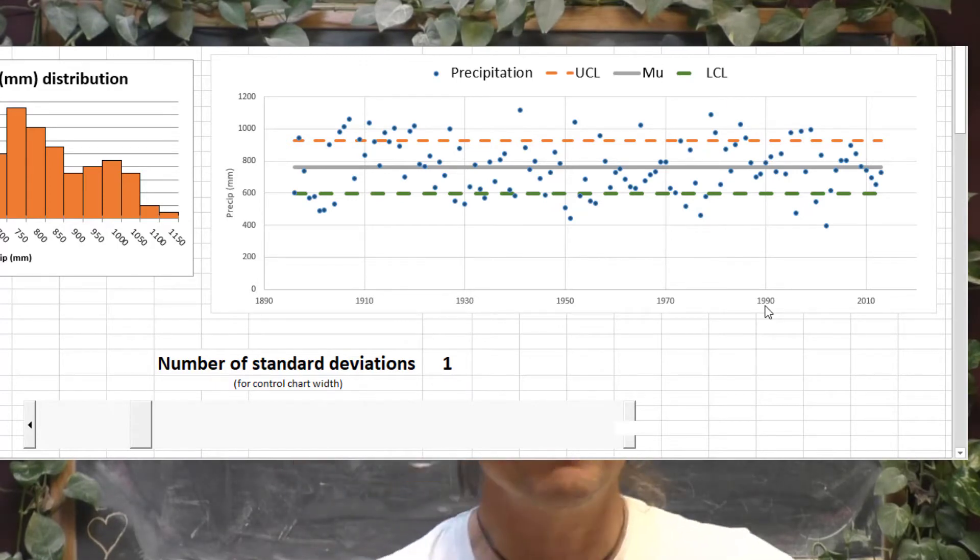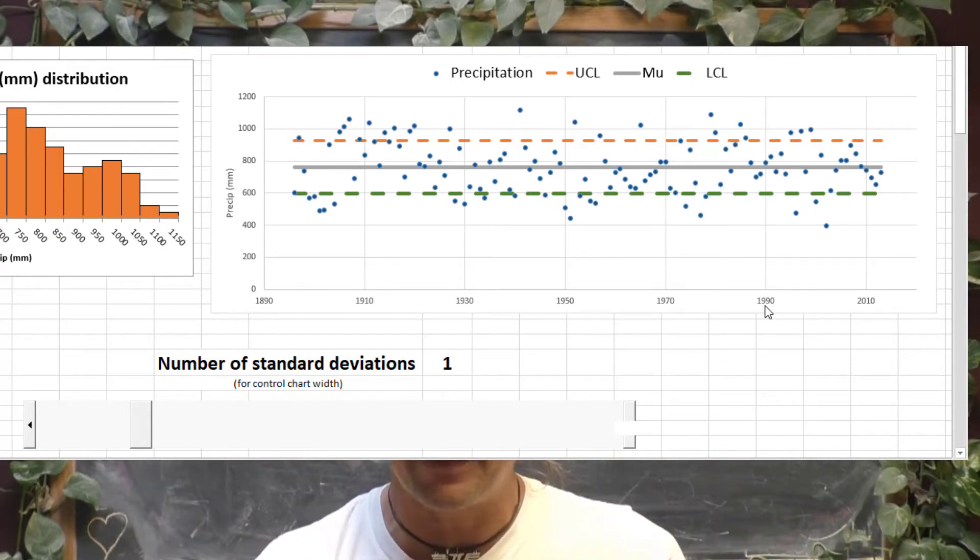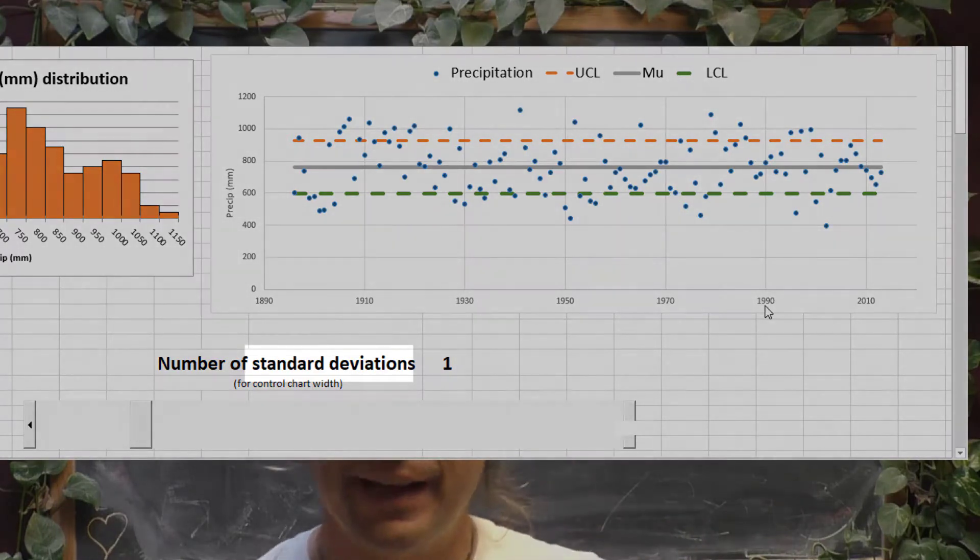Now, a control chart is nothing more than another way of looking at either of the two statistical methods that we discussed in our videos, whether it's standard deviations or whether it's IQRs. Here, I use standard deviations.